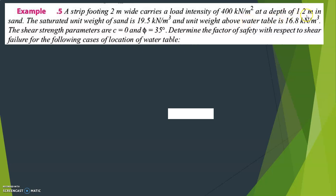The footing is placed at a depth of 1.2 meters in sand. The saturated unit weight of sand is 19.5 kilonewton per meter cube, and the unit weight above the water table is 16.8 kilonewton per meter cube. The shear strength parameters are c equal to 0 and phi equal to 35 degrees.